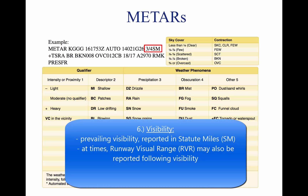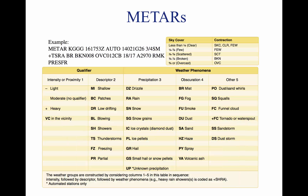At times, runway visual range (RVR) is reported following the prevailing visibility. RVR is the distance a pilot can see down the runway in a moving aircraft. When RVR is reported, it is shown with an R, then the runway number, followed by a slant, then the visual range in feet.